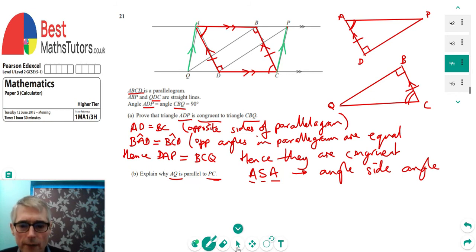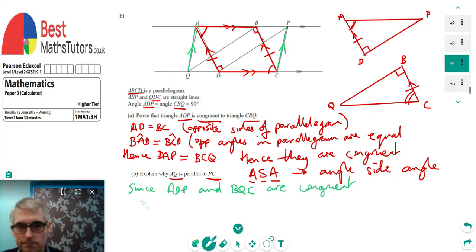So, now, what we've already shown is that these two triangles are congruent. So we've already shown, since ADP and BQC are congruent. And then it must be the case that AP and QC are of the same length. So, if you say AP and QC are of the same length.